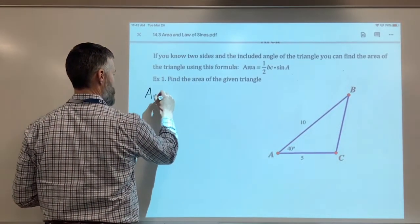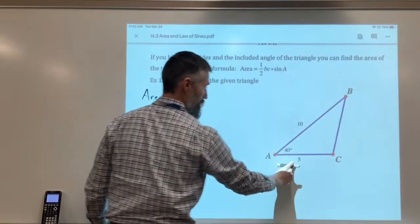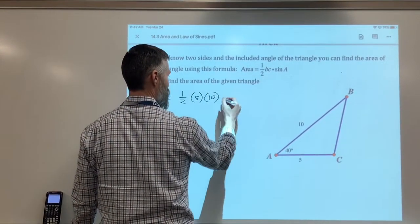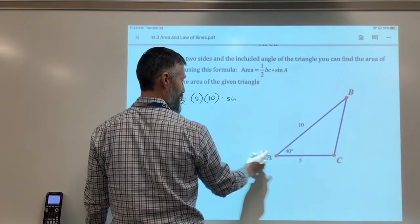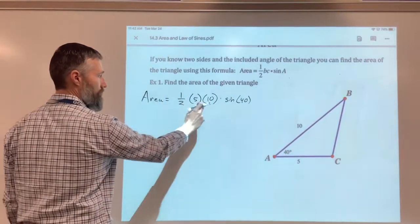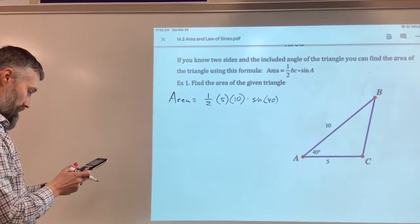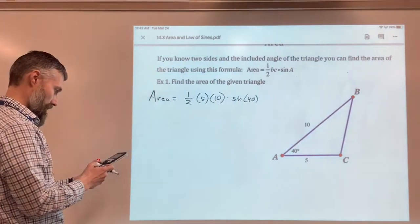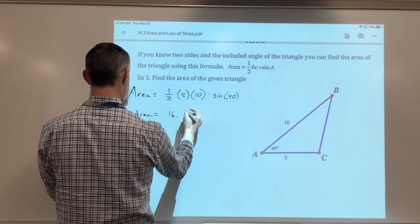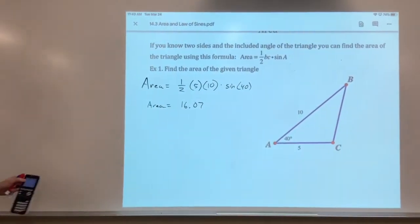So area equals one half B, which is across from B. So that's side B, 5. Side C is the 10. And then times the sine of angle A, which is 40 degrees. And you just pop all that into your calculator. This would be 25 times the sine of 40. And so I've got 25 times the sine of 40, and I get the area equals 16.07.